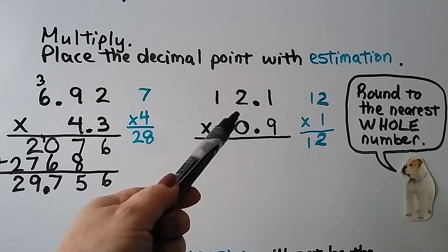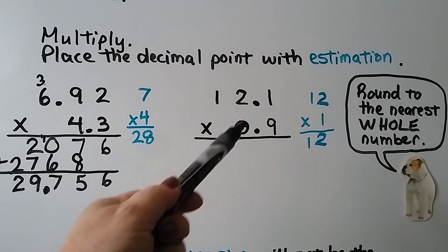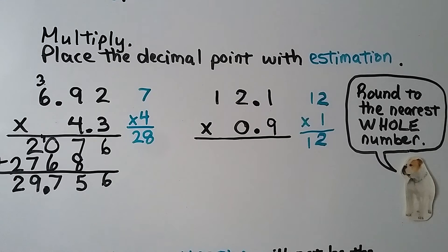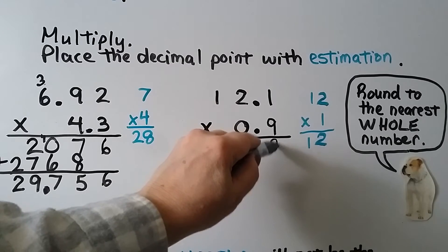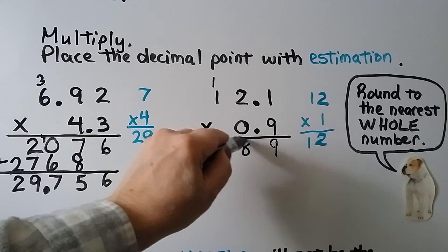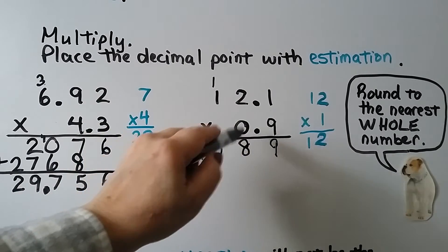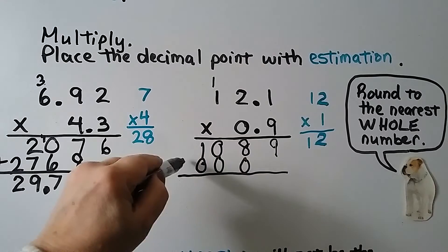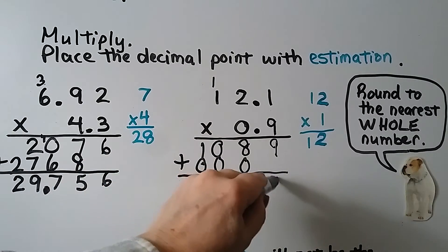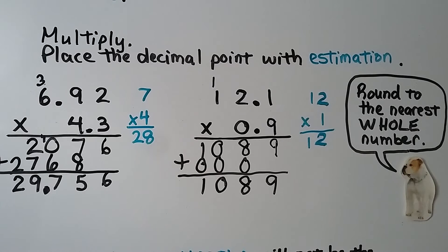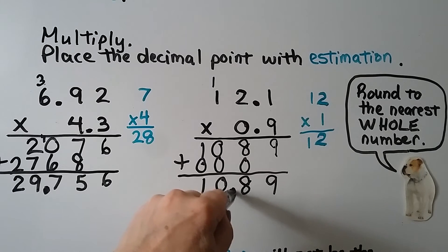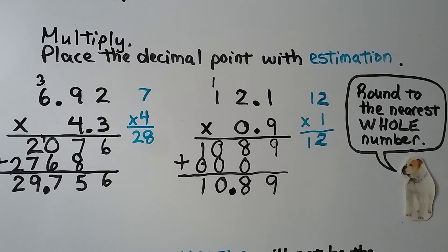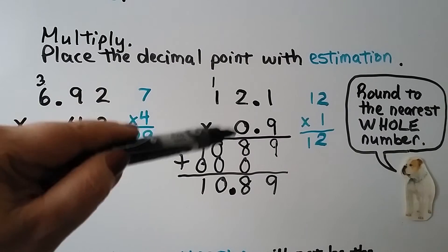For this one, the 1 tells the 2 in the ones place to stay the same, so it rounds to 12. The 9 tells the 0 to go up to 1. We have 12 times 1, that's 12. Now we multiply: 9 times 1 is 9; 9 times 2 is 18, regroup the 1; 9 times 1 is 9, plus 1 is 10. Then 0 times 1, 0 times 2, and 0 times 1 are all 0. We add and get 1, 0, 8, 9. We know the whole number should be around 12, so the decimal point goes here at 10 — that's close to 12. When using estimation, make sure you round to the nearest whole number — you're rounding the ones place.